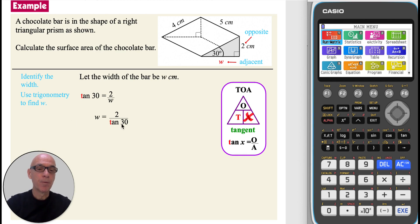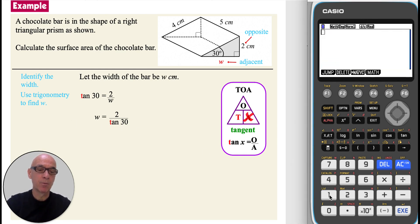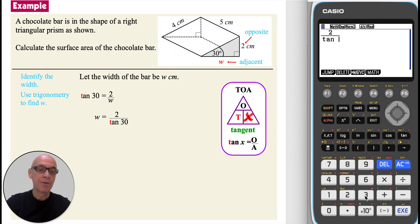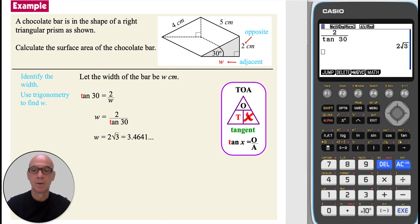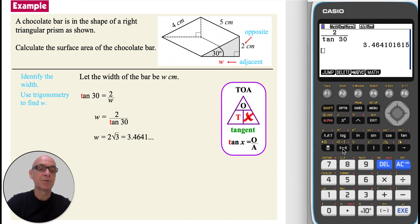Performing the calculation on the calculator: press the fraction button, enter 2 for the numerator, scroll down, press the tan button, then enter 30, and press execute to perform the calculation, giving the value shown. You can press the display button to convert the answer to a decimal.